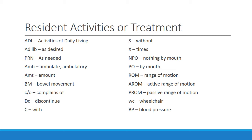AMB is ambulate or ambulatory, meaning they can walk — they may still need help, but they are able to walk. AMT means amount. BM means bowel movement — be very familiar with that term. C/O means complains of, so you may see someone that complains of a headache. DC means discontinue. C means with — you may also see this with a line over the C. S means without, and you may also see that with a line over the S.